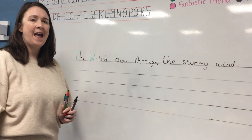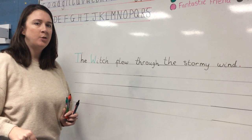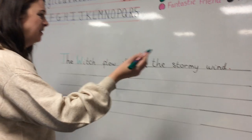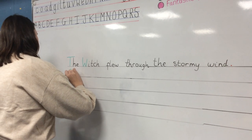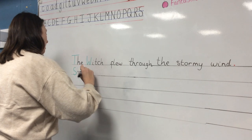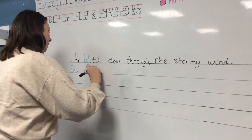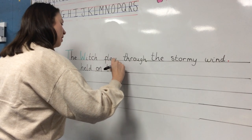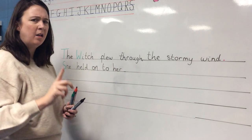I want to say that she held on to the cauldron, but the wind blew away her long black cloak. Green again because it's a new sentence. She held on to a cauldron — that's quite a long word.